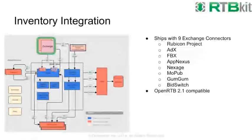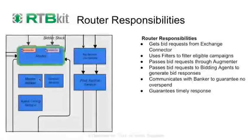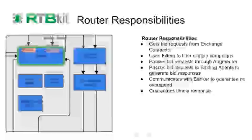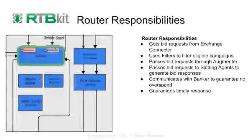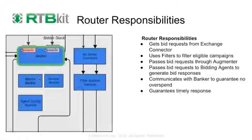Drilling into the architecture, the router is where exchange connectors run in-process. The router's job is to take bid requests, figure out which campaigns are eligible to receive each bid, and pass the request on. It also coordinates communication between the banker and the post-auction service to keep the bank up to date as wins and losses come in. The router enforces timeouts and guarantees a timely response back to the exchange — exchanges will cut off your traffic if you don't maintain response time.